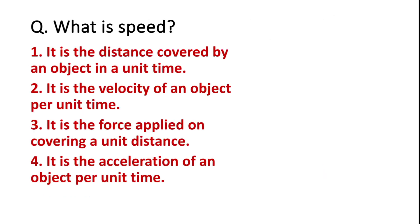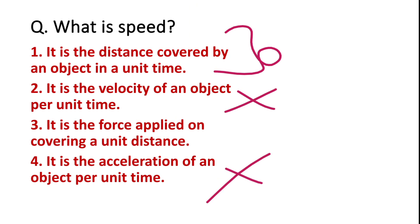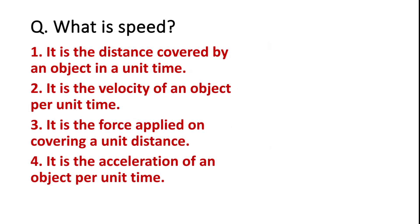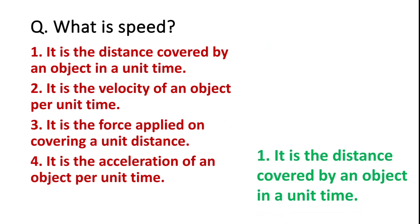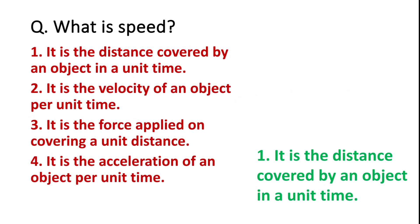What is Speed? Options: distance covered by an object in a unit time, velocity of an object, force applied covering a unit distance, or acceleration per unit time. Velocity and speed are different, acceleration and speed are different, and force is different. The correct answer is: distance covered by an object in a unit time.